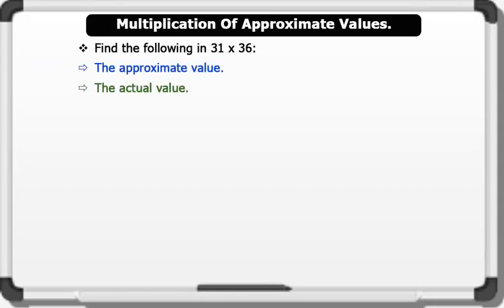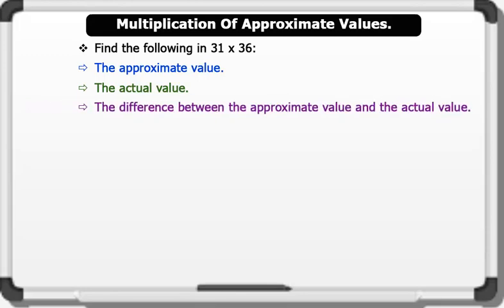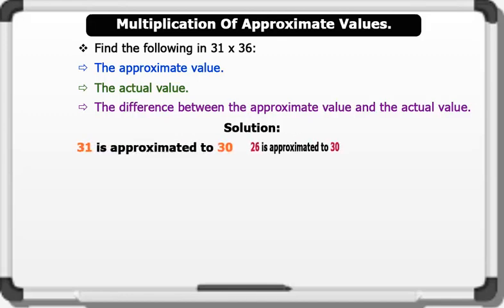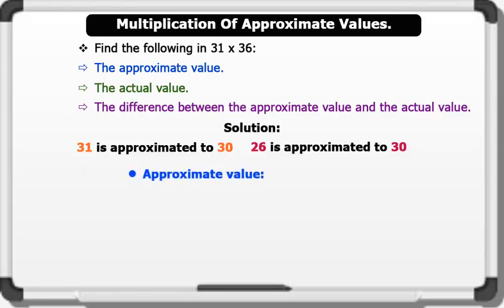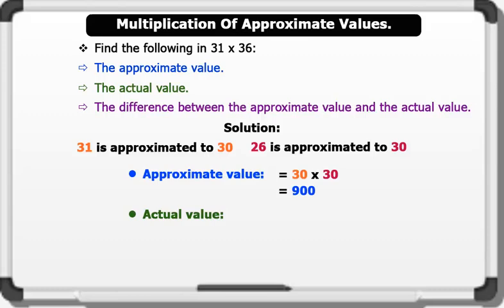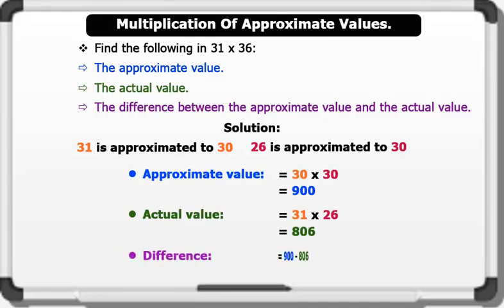Example 3: Find the approximate value, actual value, and the difference for 31 times 26. Solution: Following the approximation rule, 31 is approximated to 30 and 26 is approximated to 30. To find the approximate value, we multiply 30 times 30, which gives us 900. To find the actual value, we simply multiply 31 times 26, which gives us 806.